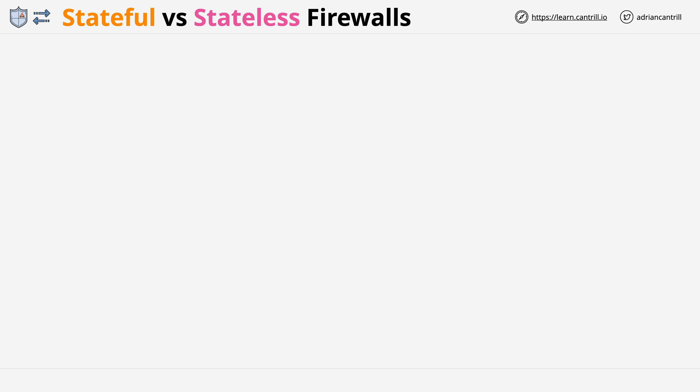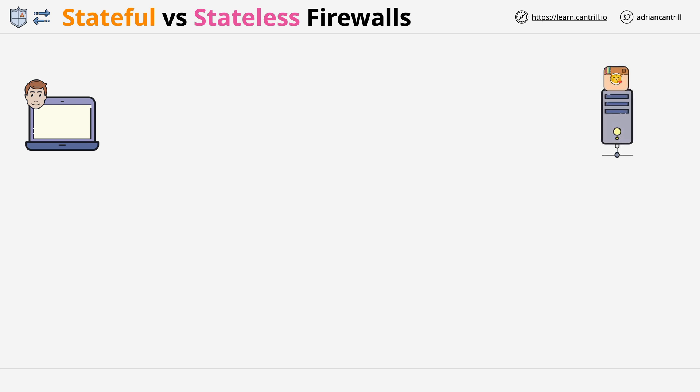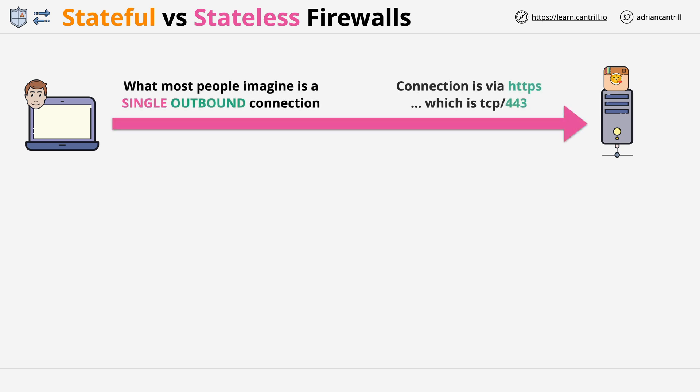Let's say that we have a user here on the left, Bob, and he's connecting to the catagram application running on a server on the right. What most people imagine in this scenario is a single connection between Bob's laptop and the server. Bob's connecting to TCP port 443 on the server, and in doing so, he gets information back — in this case, many different cat images.